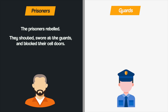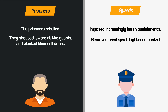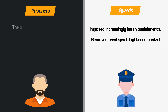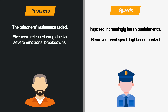On day two, the prisoners rebelled — they shouted, swore at the guards, and blocked their cell doors. In response, the guards imposed increasingly harsh punishments, removing privileges and tightening control. Very quickly the prisoners' resistance faded; they became anxious, withdrawn, and passive. Five prisoners were released early due to severe emotional breakdowns.